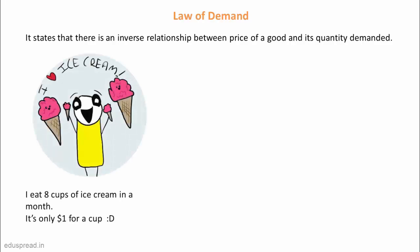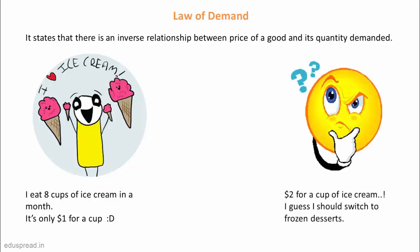Let's take it this way. If you are someone who eats 8 cups of ice cream in a month when the price of ice cream is $1 per cup, then you won't consume the same number of cups if the price rises to $2 per cup. You might then consume only 6 cups per month or maybe you will switch to some other dessert which is cold and yummy just like ice cream is.